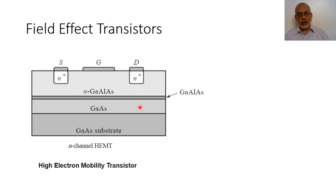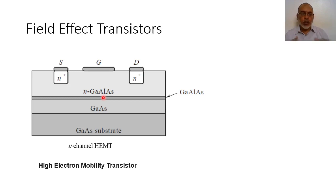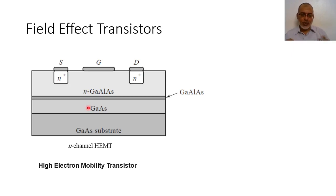In the following video we are going to discuss in detail why this structure increases the mobility. But at least this two-dimensional electron gas has larger mobility, and that is why we call this transistor the high electron mobility transistor. The basic idea is a heterojunction between the wide bandgap gallium aluminum arsenide and the narrow bandgap undoped gallium arsenide.